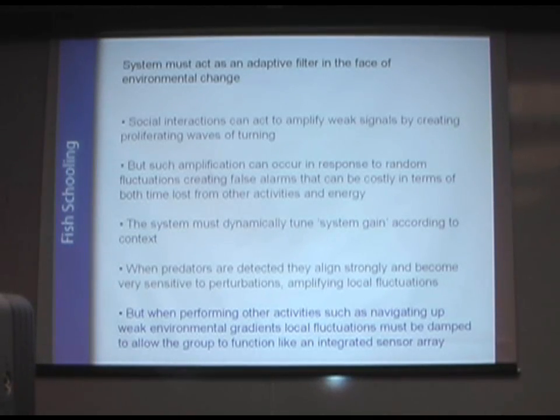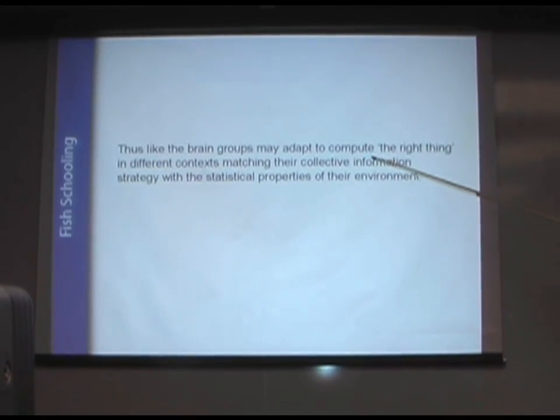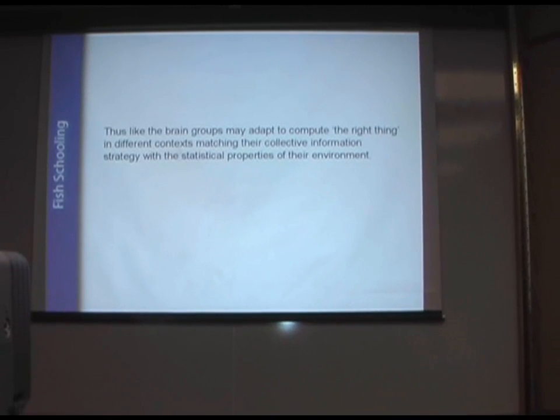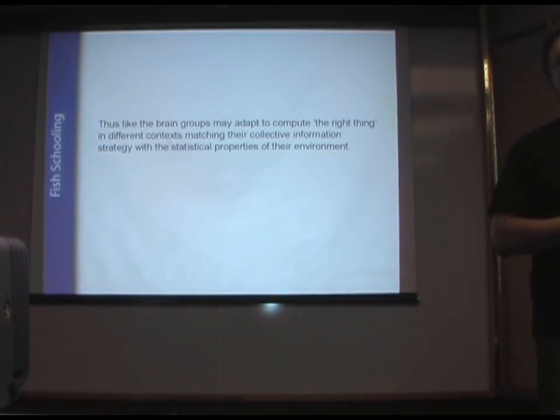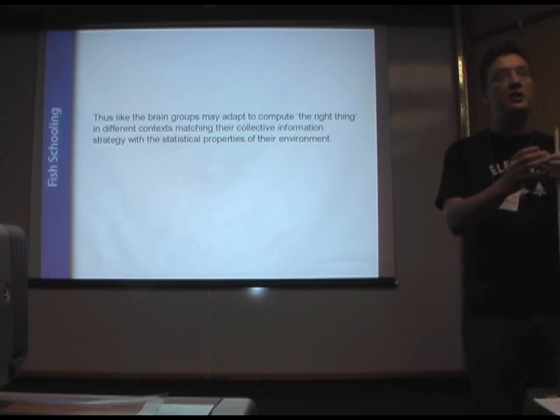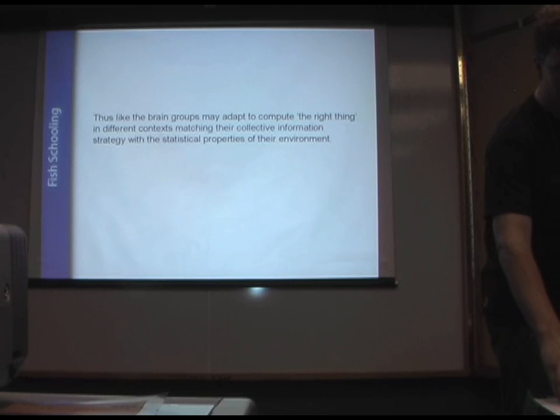So it's very interesting for us to think about how these different systems can adopt these different collective strategies to compute things in their environment. So thus, like the brain, groups may adapt to compute the right thing at the right time. So matching the collective information strategy with the statistical properties of the environment. And this is something that neuroscientists are very familiar with and have been studying in great detail with even relatively small neural groups. But as yet, hasn't been studied with animal groups.